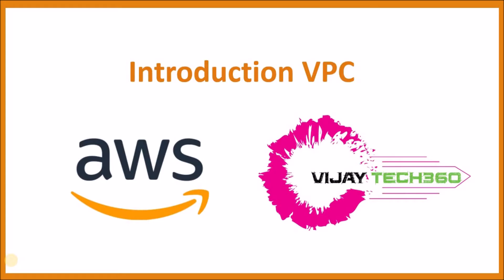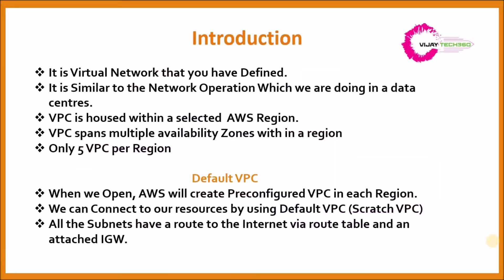Hi friends, welcome to VGTech 360. In this video we are going to see about VPC, which is also called Virtual Private Cloud. VPC is a virtual network where you can define your own network — it is almost similar to network operations you do in your own data center. It lands in an AWS region. We know there are 18 regions; if you see North Virginia, you can create a VPC there and deploy all your resources inside it to create your own network.